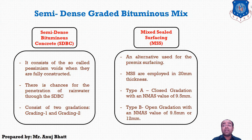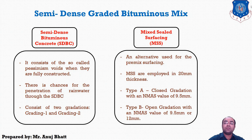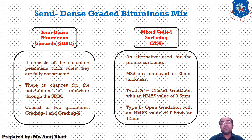The scaling will over time result in potholes on the road. Now talking about Mixed Seal Surfacing (MSS): this is an alternative to pre-mixed carpet. Both PMC and MSS are employed in 20 mm thickness. There are two gradations specified for the MSS mix — Type 1 and Type 2 — which are differentiated by their nominal sizes. Type 1 is a close gradation with size 9.5 mm.